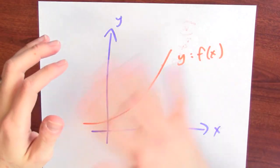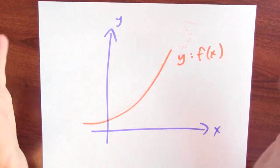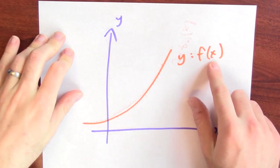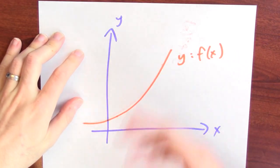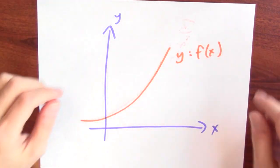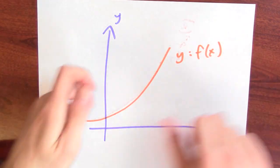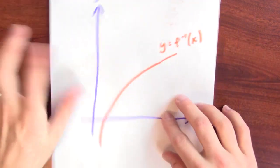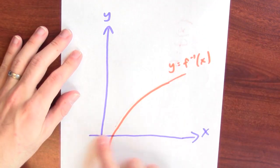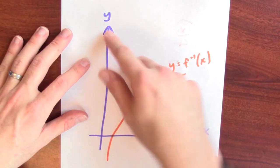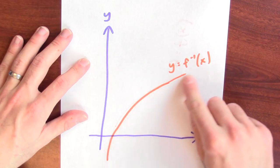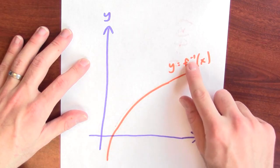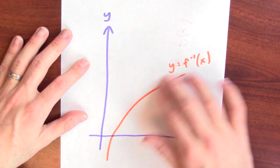How can I justify a result like that? Why should something like that be true? One way to think about this is geometrically. Here I've done the graph of just some made up function, y equals f of x. What does a graph of the inverse function look like? One way to think about this is that the inverse function exchanges the roles of the x and y axis, which is the same as just flipping it over. What was the y axis is now the x axis, what was the x axis is now the y axis. And this graph here is y equals f inverse of x.